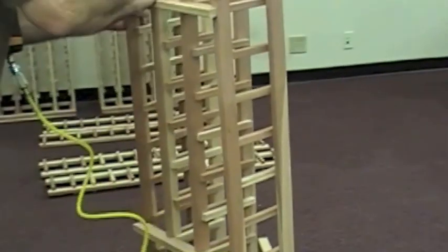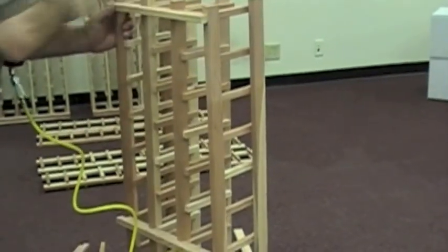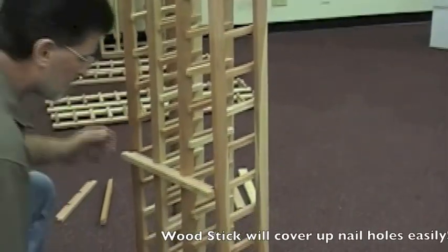Back to the assembly, add in all your rails and secure them. If you're securing in every notch, as our installer currently is, you can always use wood putty or a wood stick to hide any nail holes.